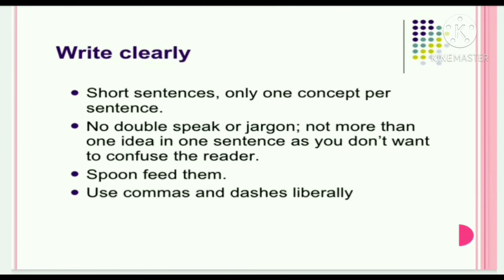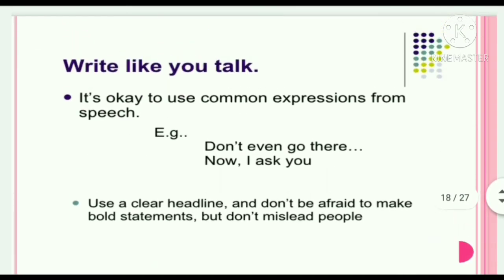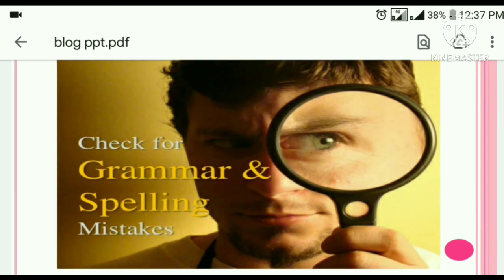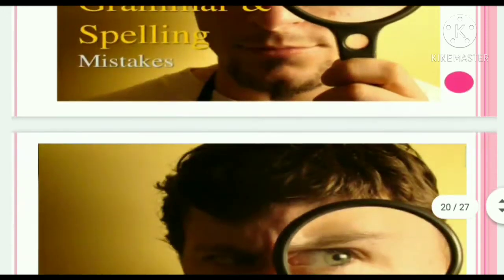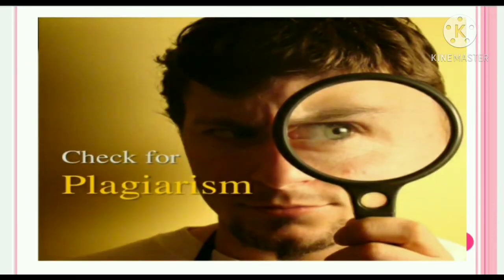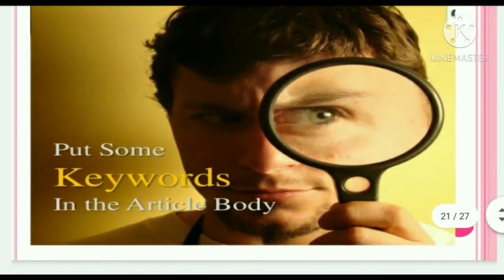Whatever information you write in the blog should be clearly written. Don't write lengthy passages — keep it short; three or four sentences would be sufficient. Use punctuation marks — comma, dash — appropriately. Don't confuse the reader; otherwise, they won't visit your blog again. Use a communicative approach so readers feel you are talking to them directly. Use a clear headline. Don't make false statements or misguide people. Check grammar and spelling mistakes, and check for plagiarism — don't copy-paste from other blogs. Apply keywords so reader traffic on your blog will increase.